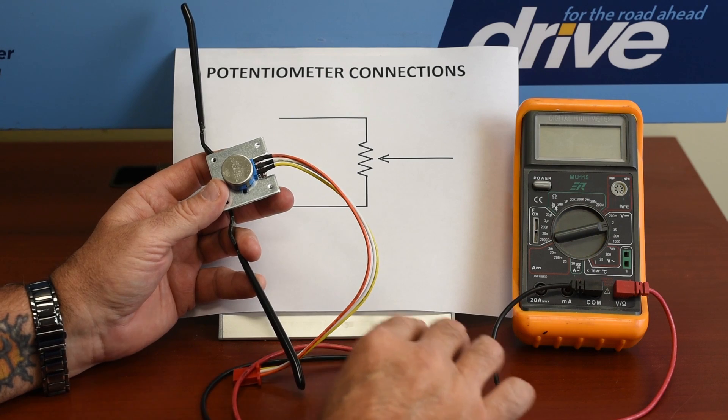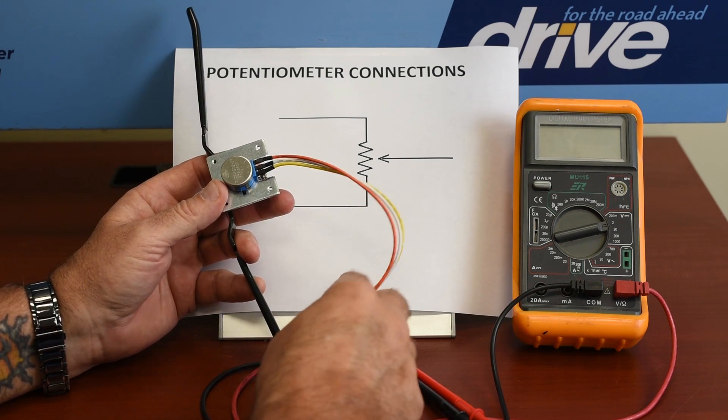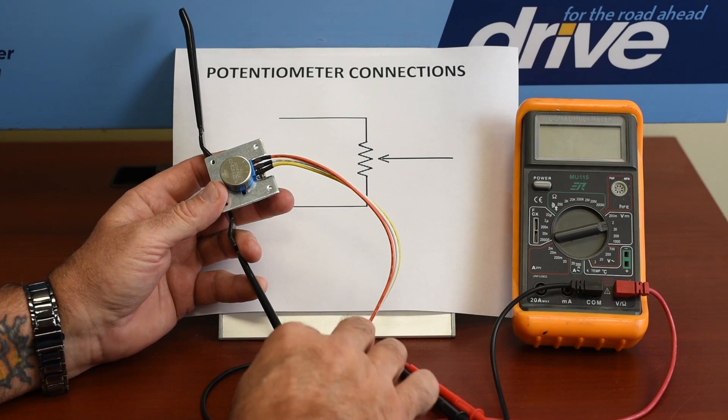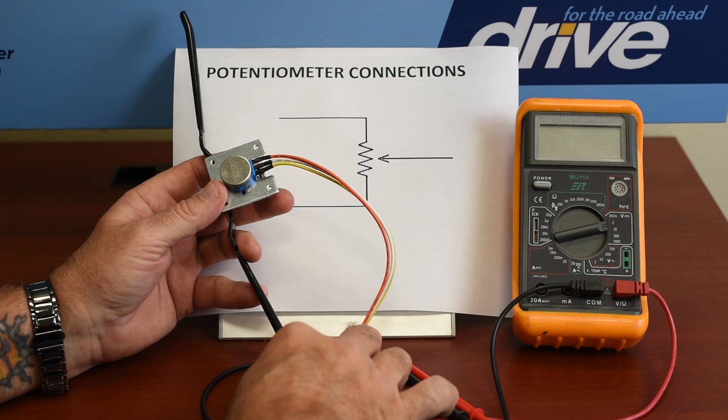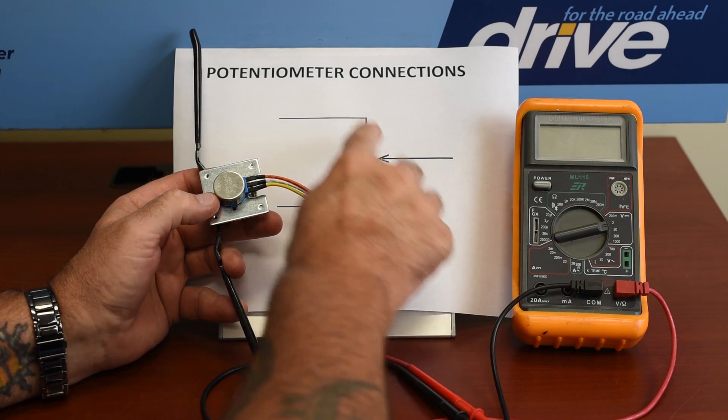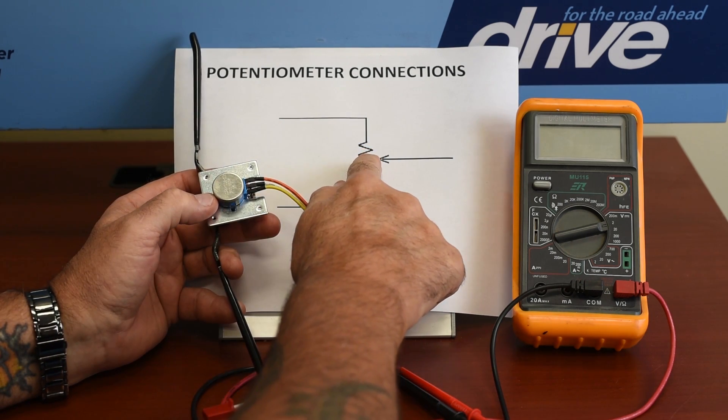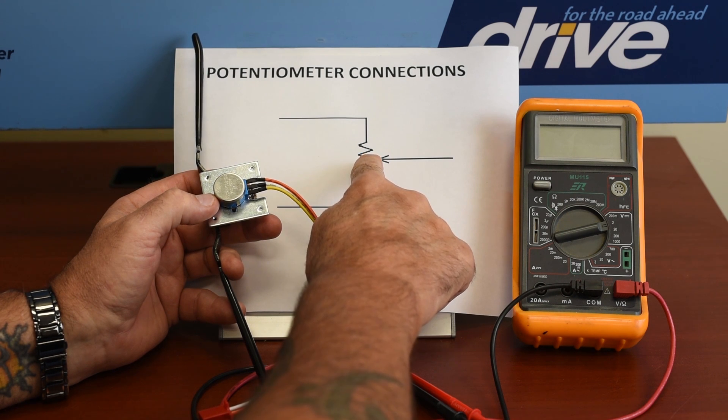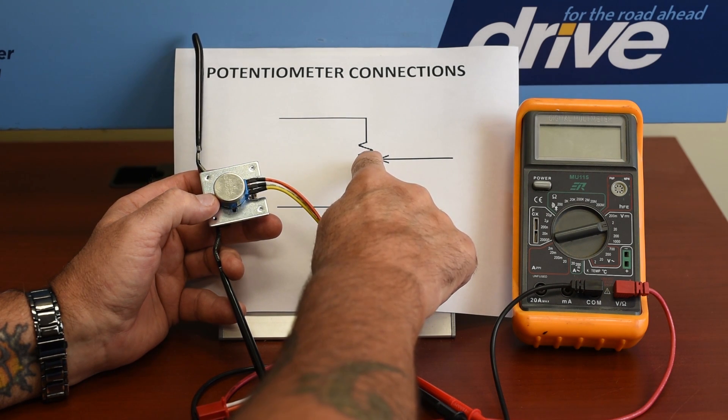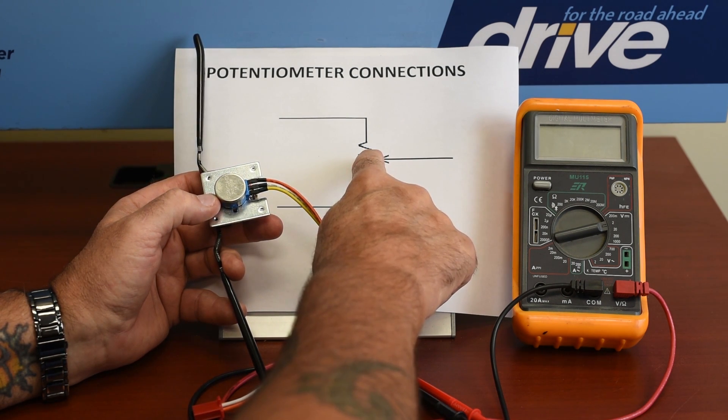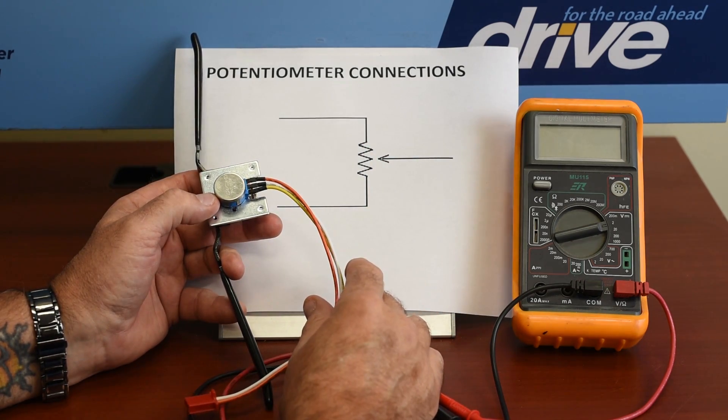So what we want to do is measure the balance of the potentiometer to make sure that the outside to the middle and the other outside to the middle is within 10% resistance of each other. And that will tell us that the pot is balanced and the circuit will work correctly.